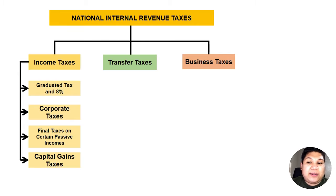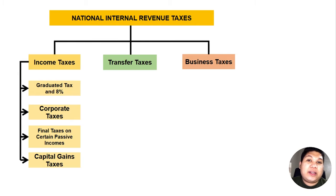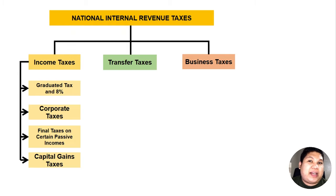The common thing about income taxes — from graduated to capital gains taxes — is that they are imposed on the right to earn income. Any taxpayer's income is subject to income tax, whether you are an employee, businessman, professional, corporation, celebrity, influencer, or vlogger. Any income you earn will be subject to income tax, and you can be subject to any of those four or a combination.